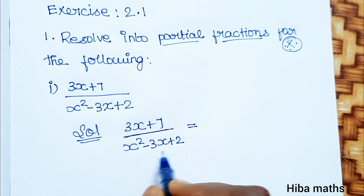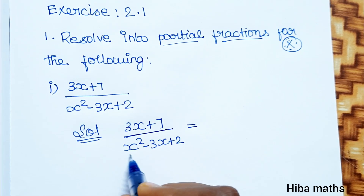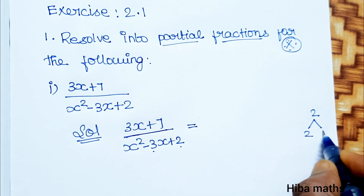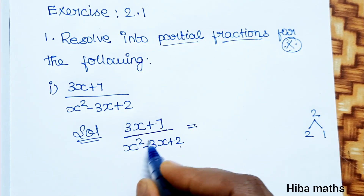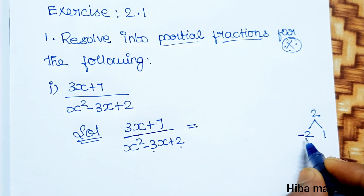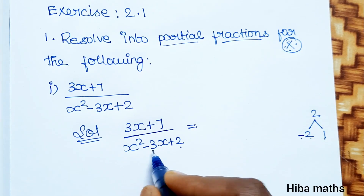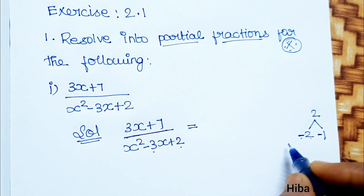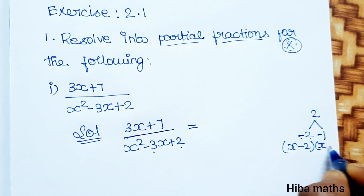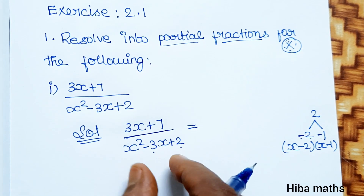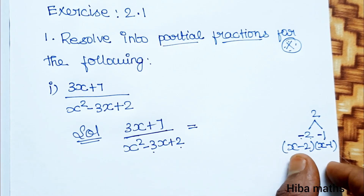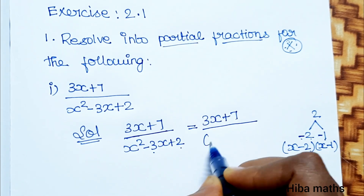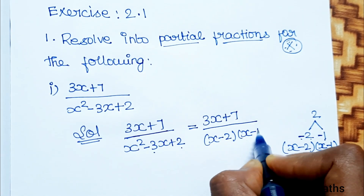If you factor the denominator, you get x minus 2 into x minus 1. The middle term is minus 3, and minus 2 plus minus 1 gives minus 3. So the denominator factors as x minus 2 and x minus 1.